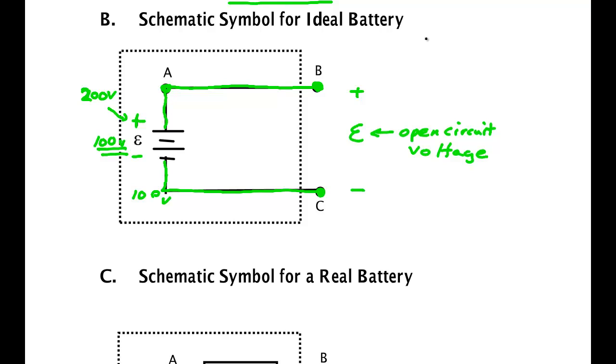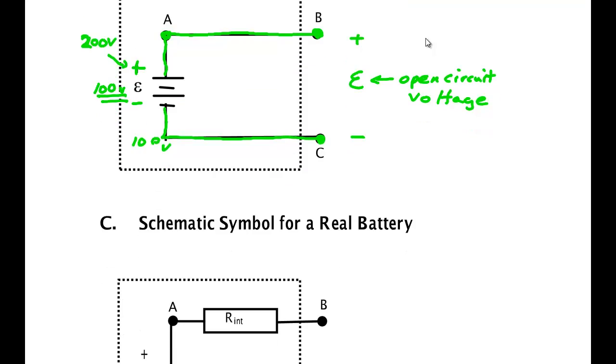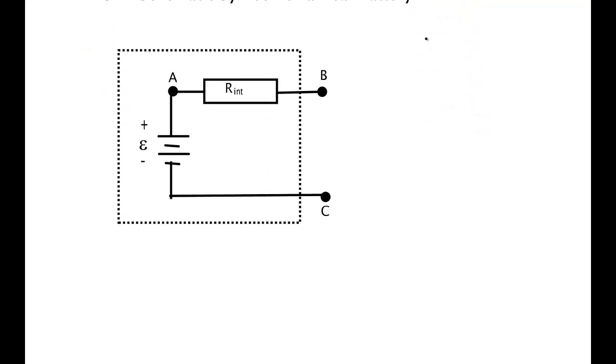Now a real battery doesn't look like that. A real battery looks like the diagram shown in diagram C. It does have a voltage capability, but it also has some resistance because it's made of materials, chemicals, various lead plates and such. From a circuit element, although we can't see it, all this is inside this dashed line. It's as if there was this perfect battery but also this resistance. We call this the internal resistance of the battery.